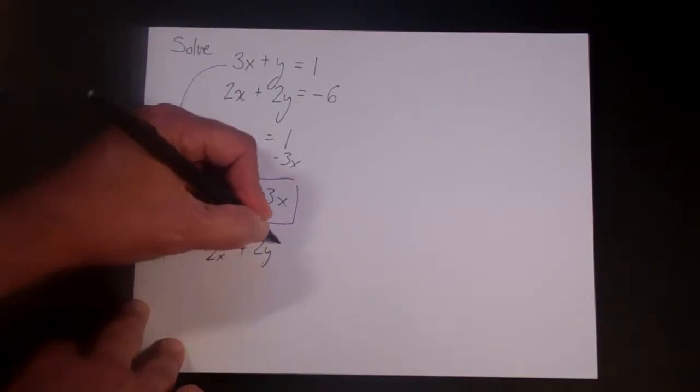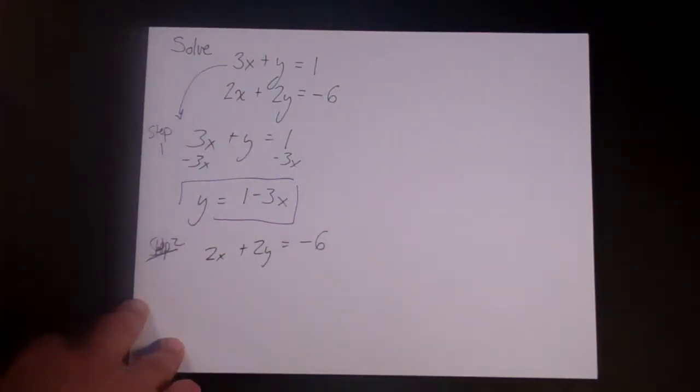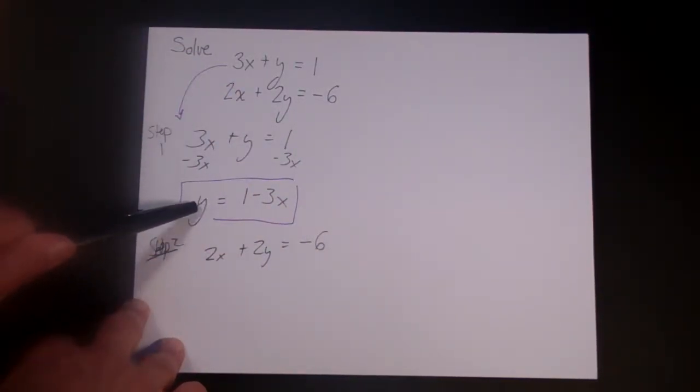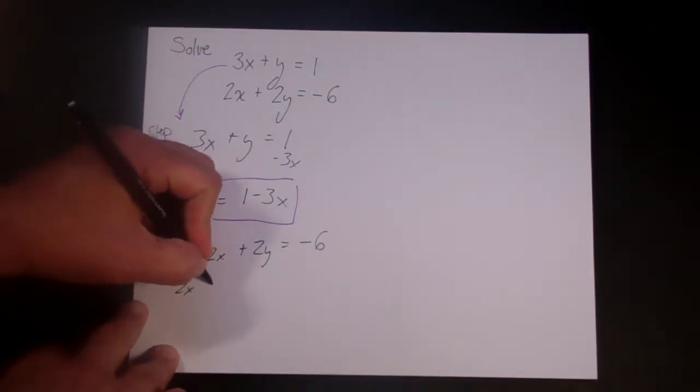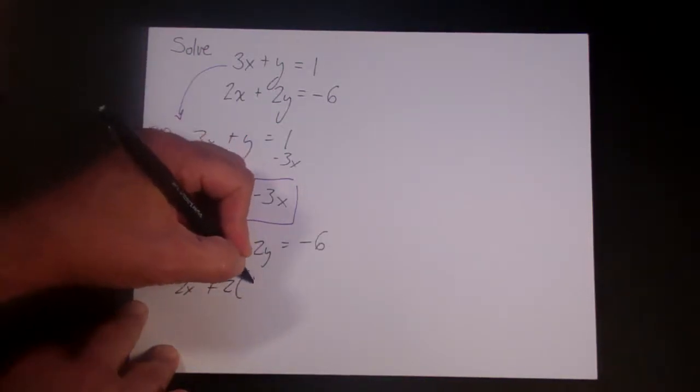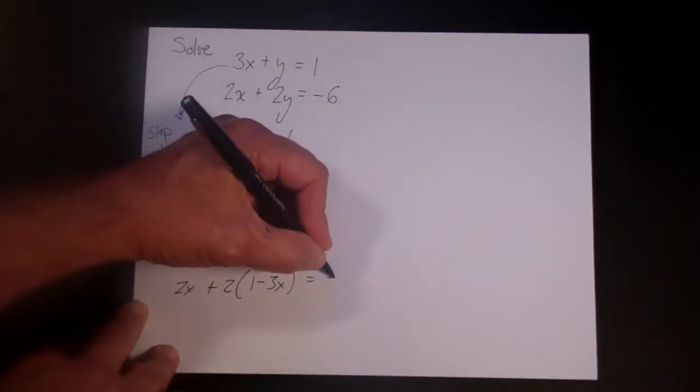2x plus 2y is equal to minus 6, and wherever there is a y, let's plug in 1 minus 3x. So we have 2x plus 2, and let's plug in 1 minus 3x is equal to minus 6.